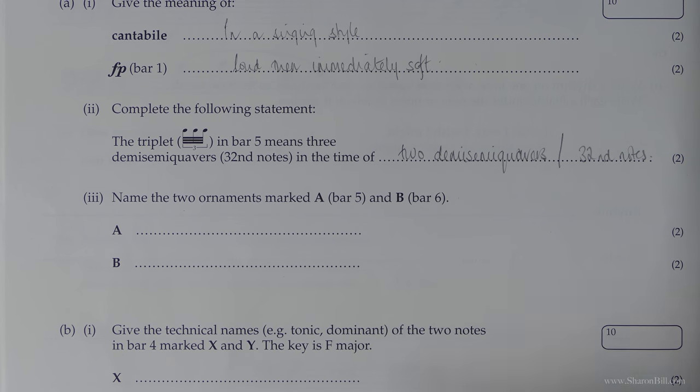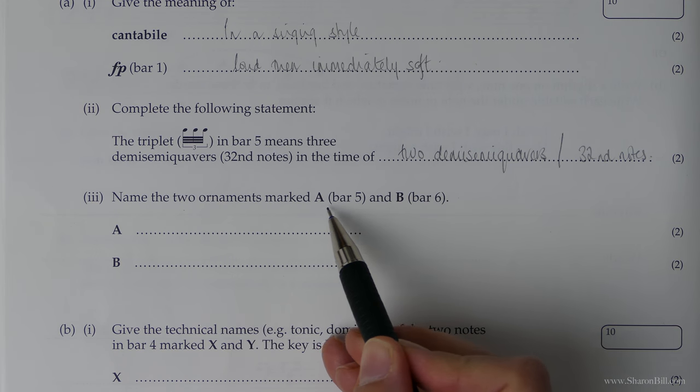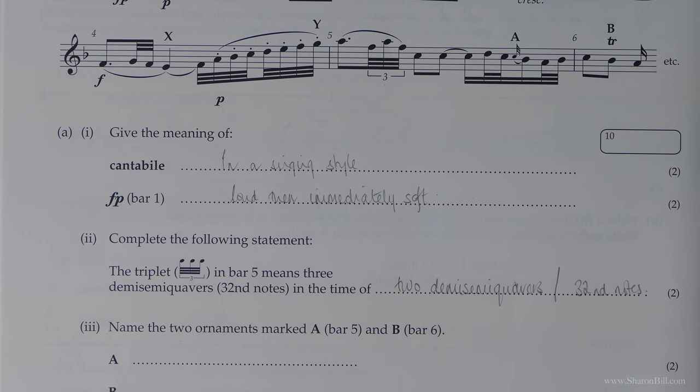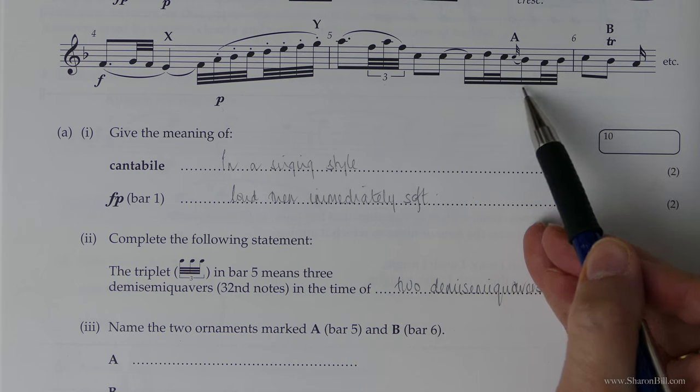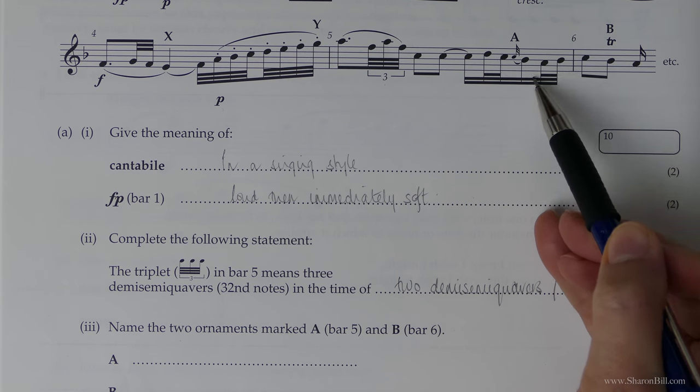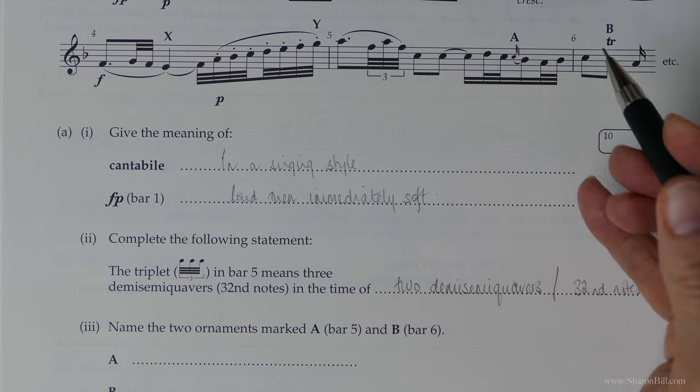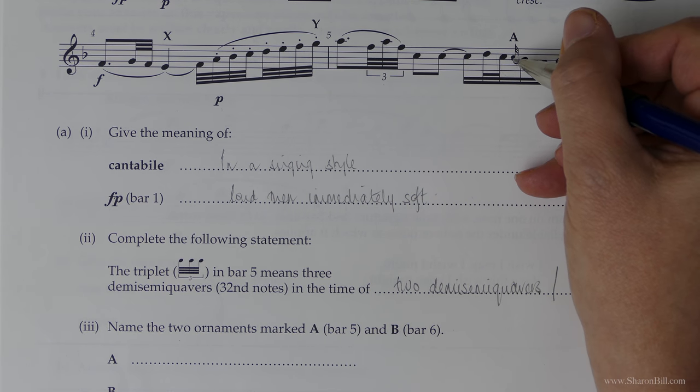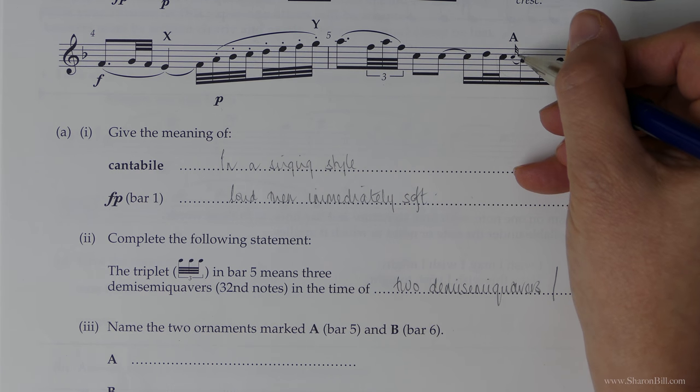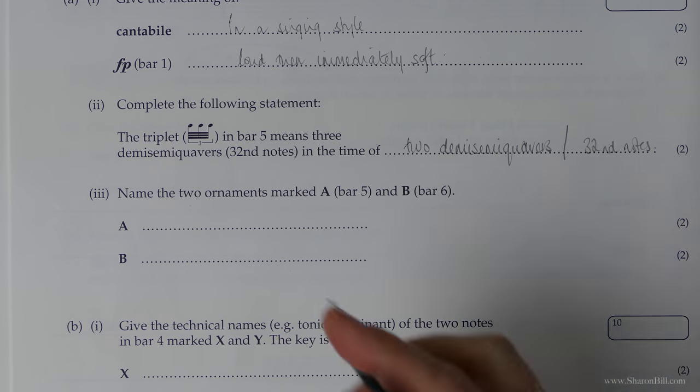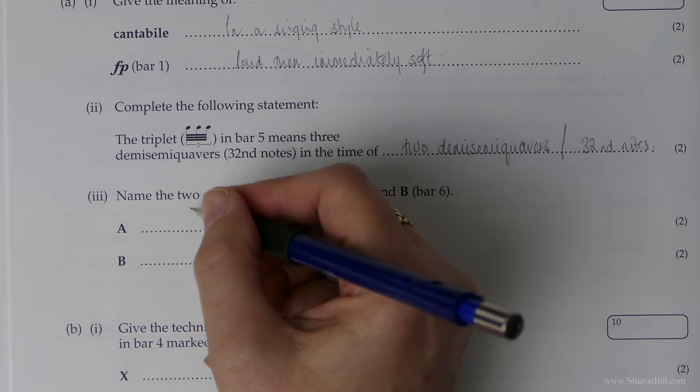Name the two ornaments marked A in bar 5 and B in bar 6. So let's have a look. So A. Now that's an appoggiatura. Not to be confused with the acciaccatura or the grace note, which has got a little line through it. It's sort of a crush note when it's got a little line through it. This is an appoggiatura where you share the value between the two equally. You spell that with double P double G.